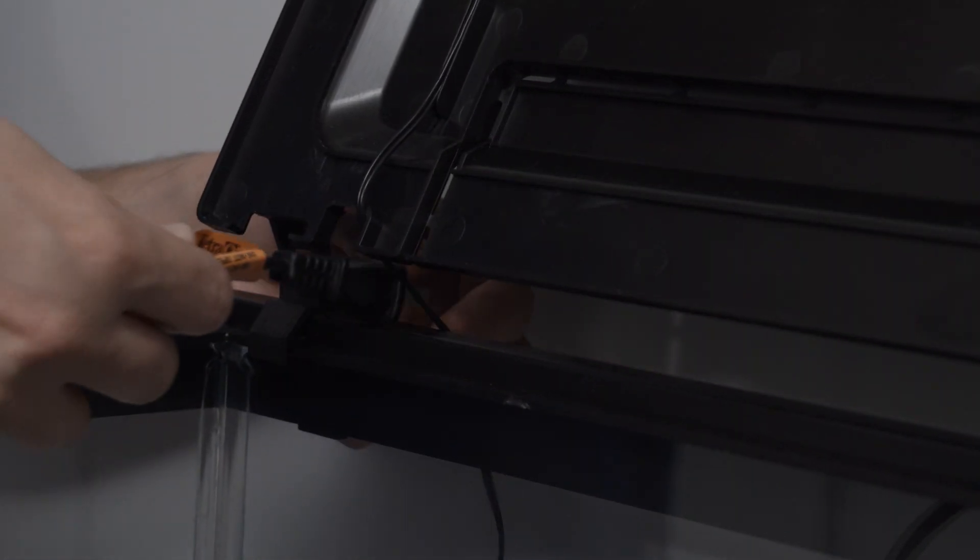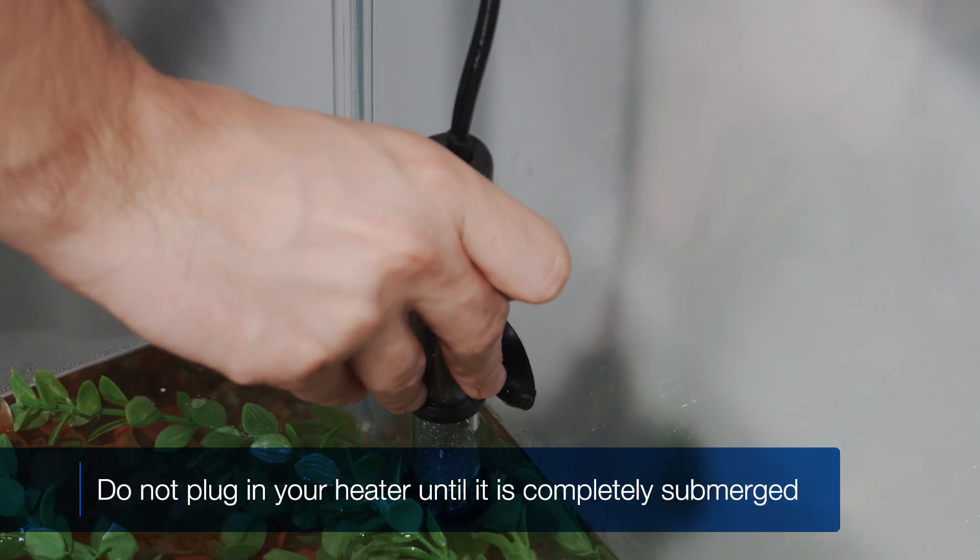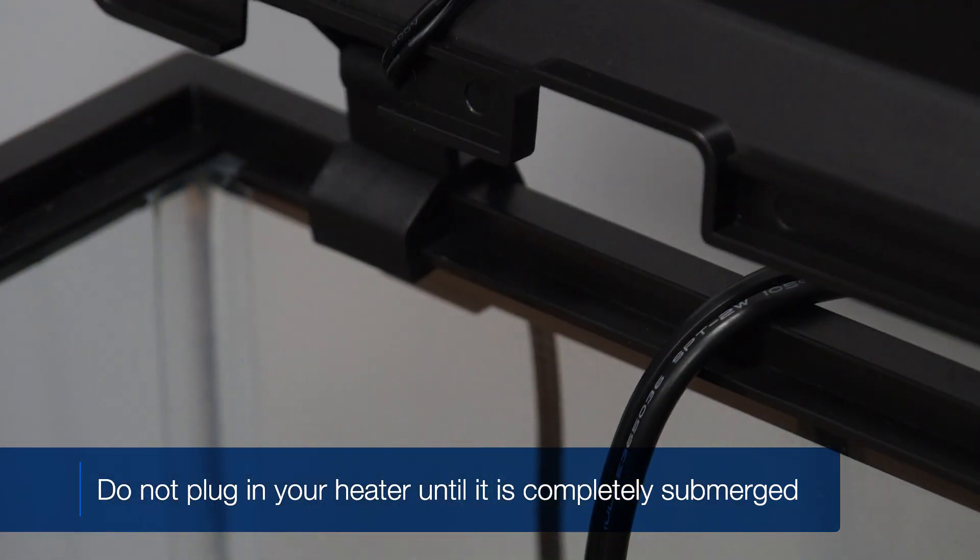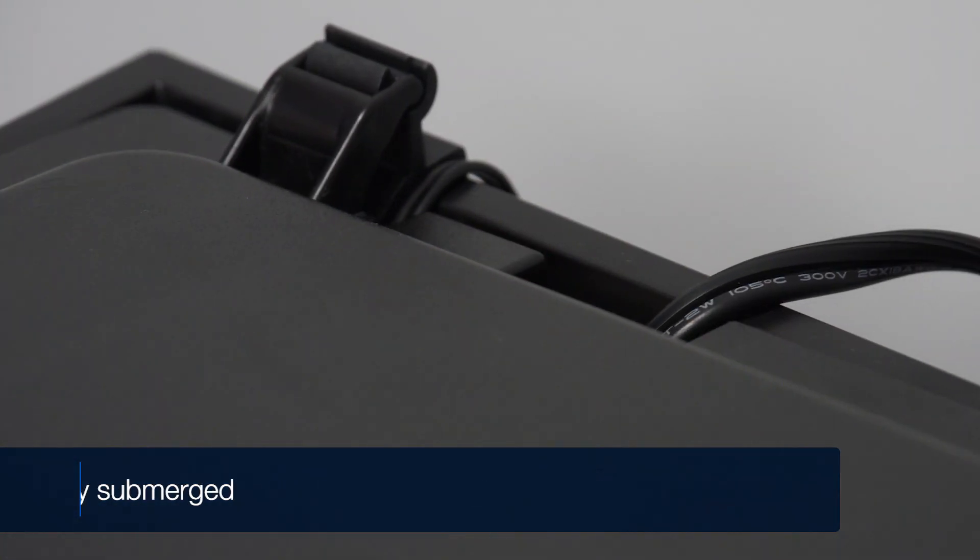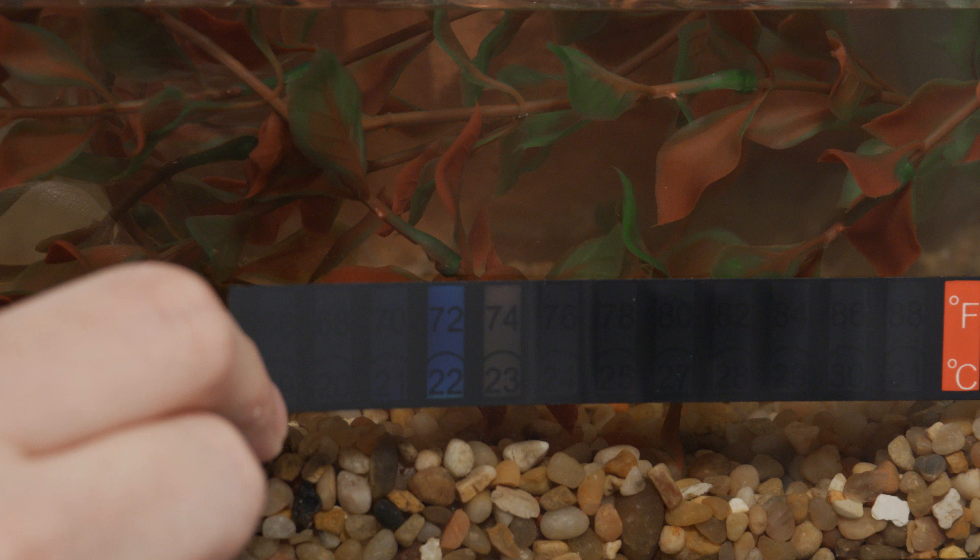Then, feed your heater's plug through the cord slot in the hood, and suction cup your heater as low as you can. Make sure it's completely underwater before plugging it in. Finally, stick your thermometer on the outside of your aquarium.